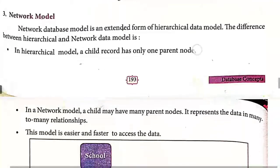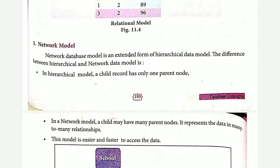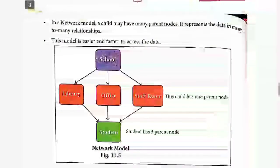Next is the network model, which is a combination or extension of the hierarchical model. The hierarchical model has a one-to-many or parent-child structure, but the network model supports both one-to-many and many-to-one combinations. In the hierarchical model, a child record has only one parent node, whereas in the network model, a child can have many parent nodes. So it represents data in a many-to-many relationship.